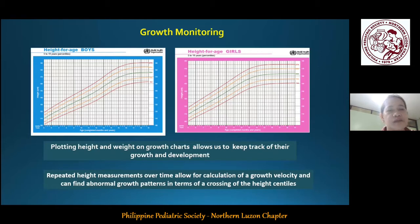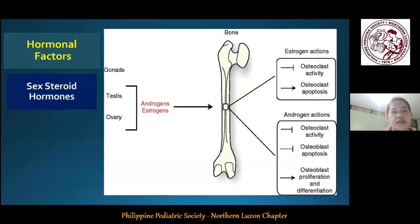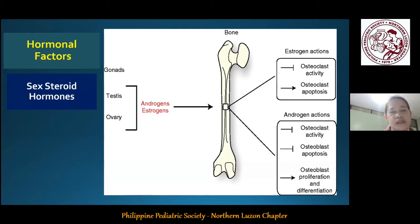In addition to their reproductive functions, sex steroids influence skeletal physiology, at least in part by acting directly on bone cells via their classical receptors for estrogens or androgens. Sex steroids play an important role in bone growth and attainment of peak bone mass, and positively influence bone growth, maintenance, and maturation. Estrogens, mainly 17-beta-estradiol, are essential for the maintenance of the balance between bone formation and bone resorption. Androgens, on the other hand, favor periosteal bone formation in men and maintain trabecular bone mass and integrity.